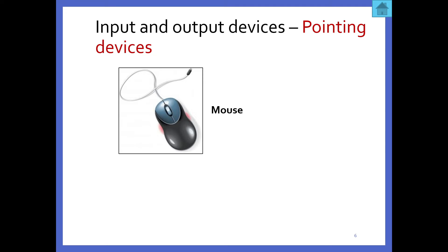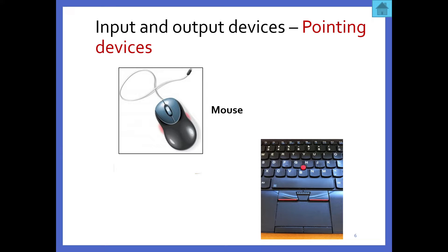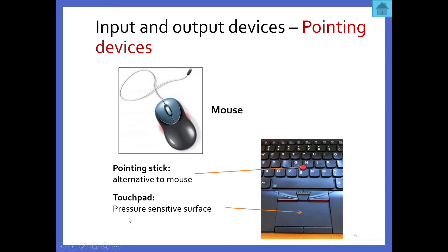We also have pointing devices. Our mouse can also function as a pointing device, and when we look at a laptop, the mouse is slightly different. You have a touchpad where you move your finger to move the mouse around, or a pointing stick which is an alternative to the mouse. Not all laptops have the pointing stick — most just have the touchpad area. And then we have our buttons for left click and right click.